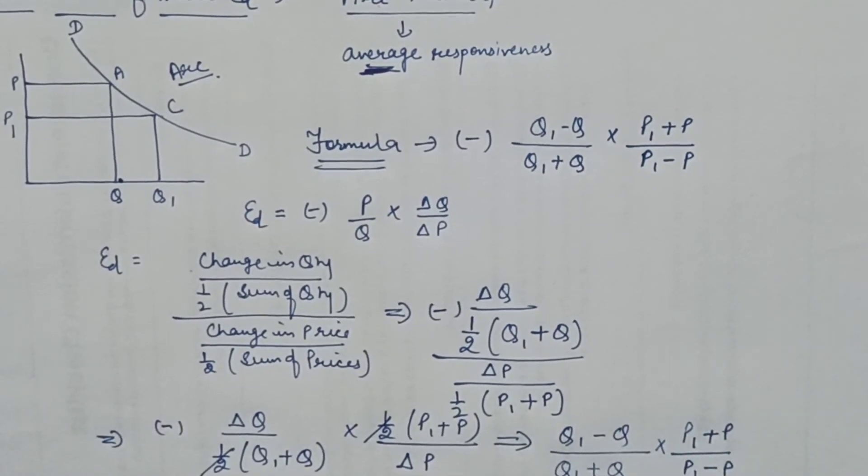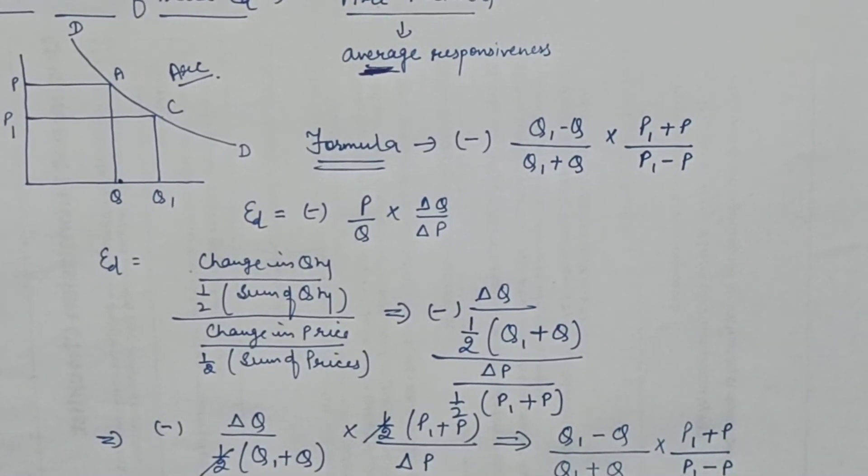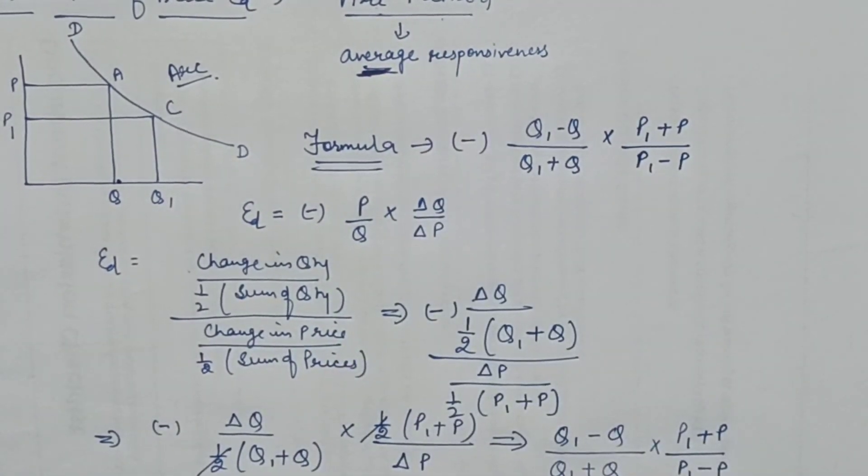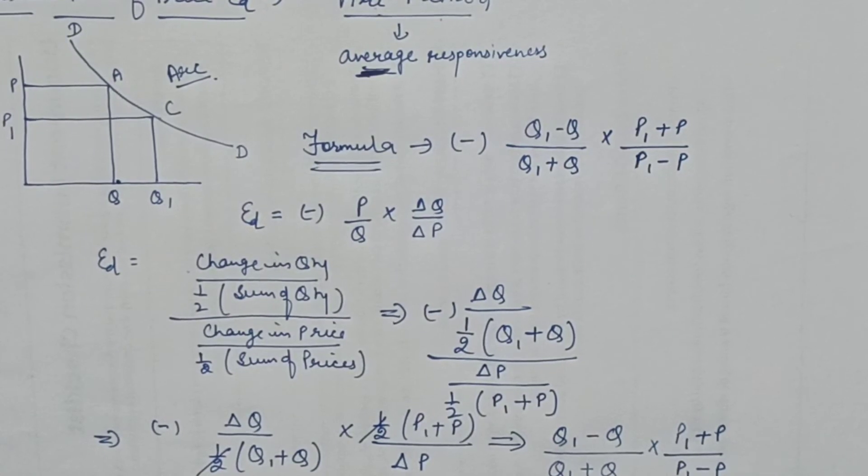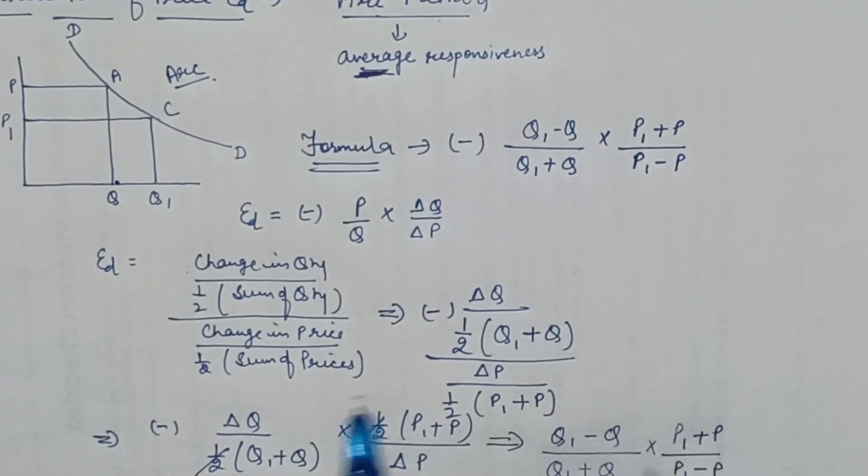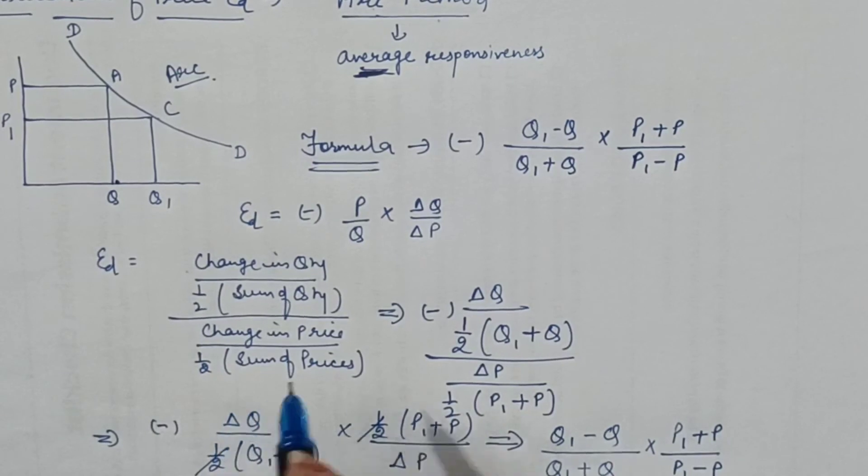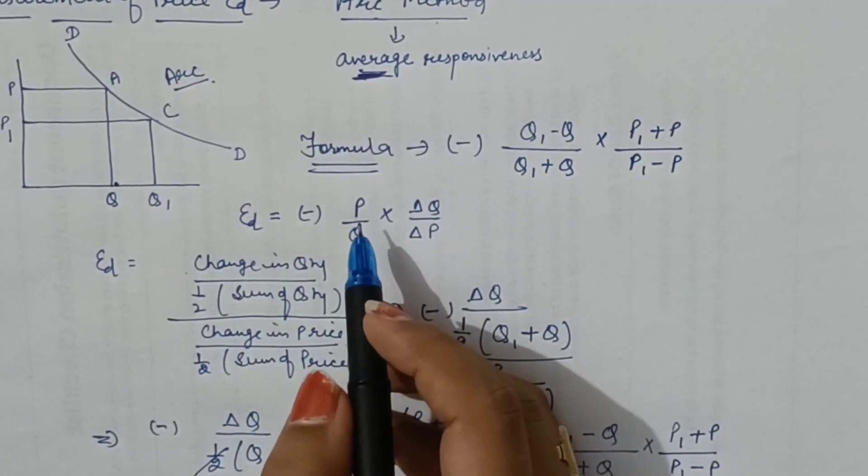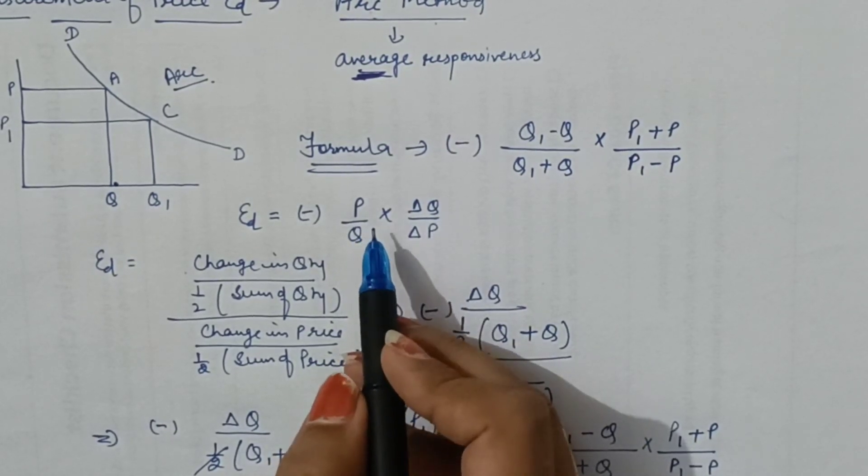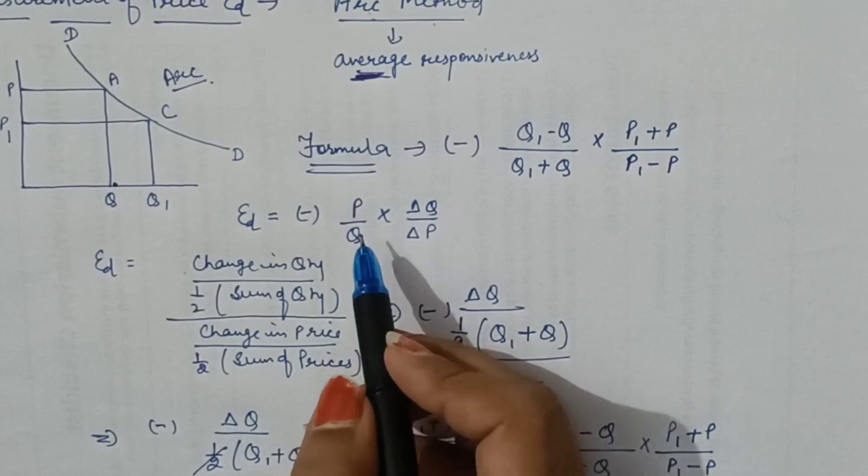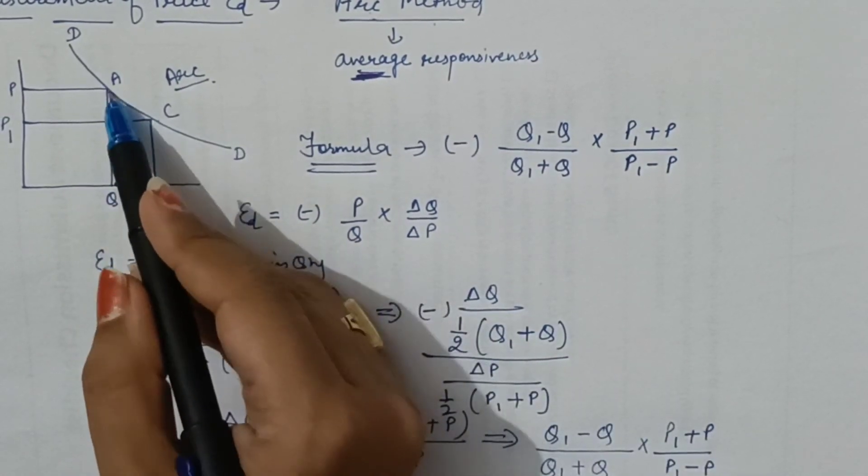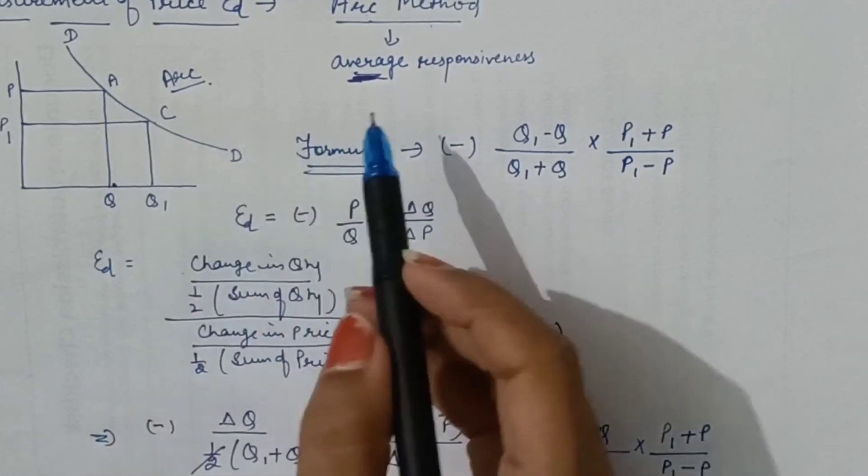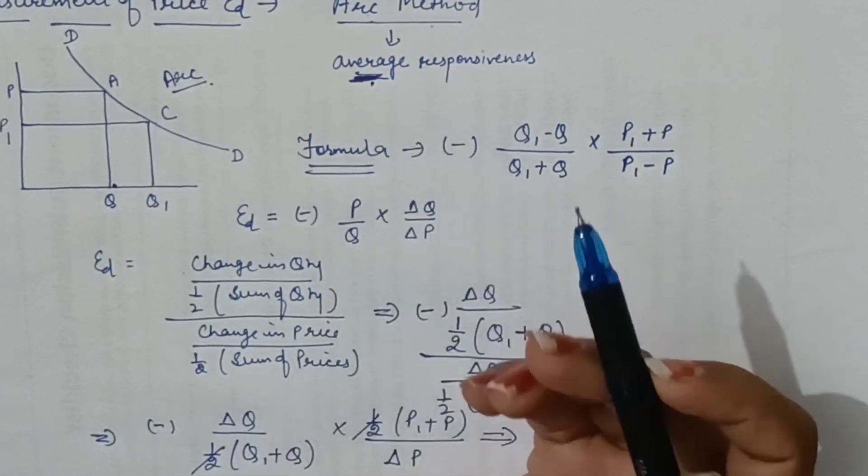For measuring price elasticity of demand according to the ARC elasticity method, that would be the formula. The single change between ARC method and percentage method is the price. In point method, we calculate elasticity of demand on a particular point, so we used initial price and quantity. But in ARC, there are various prices in this region, so we have to take the average of prices as well as quantities.